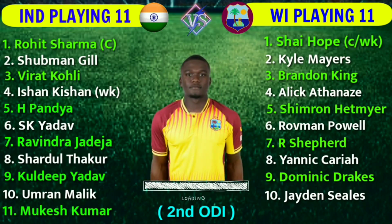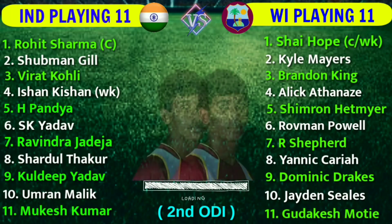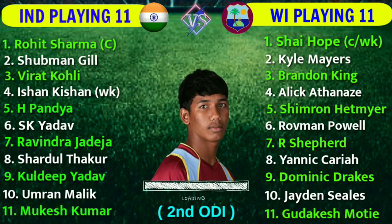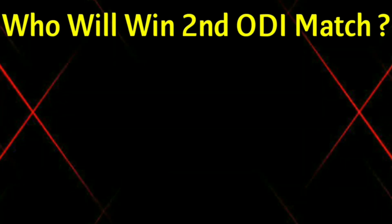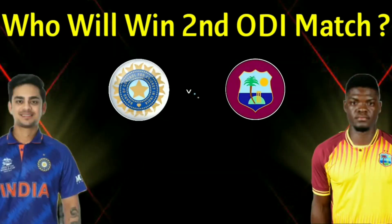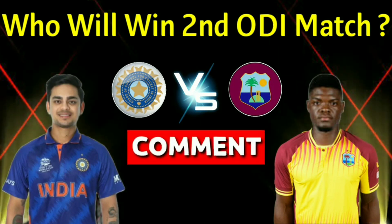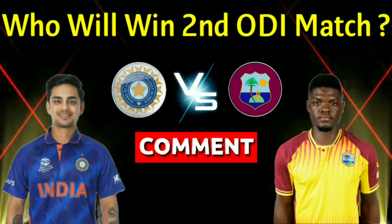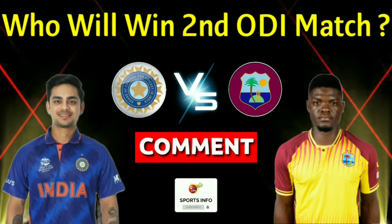9. Dominic Drakes — Left-Arm Fast Bowler. 10. Jayden Seales — Right-Arm Fast Bowler. 11. Gudakesh Motie — Left-Arm Spin Bowler. Dear viewers, who will win the second ODI match between India vs West Indies? Tell us in the comments and subscribe to our YouTube channel for more updates.